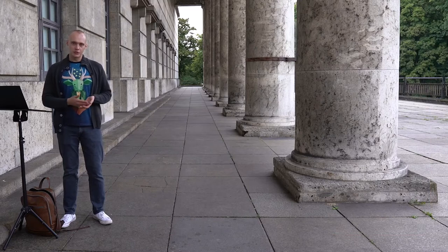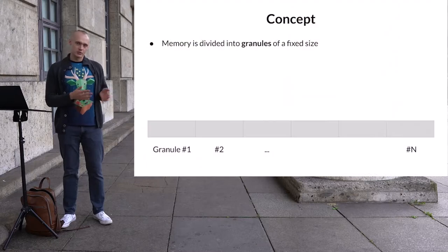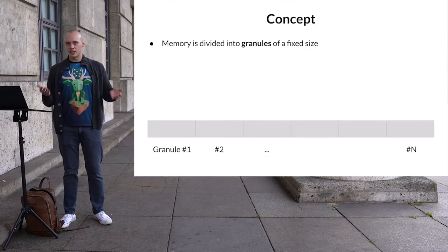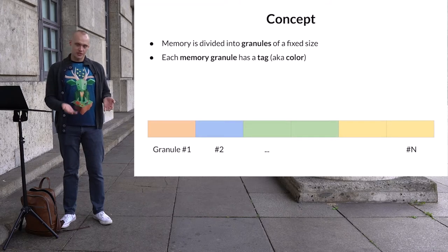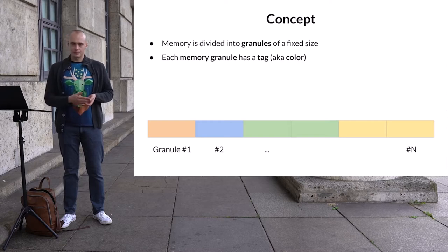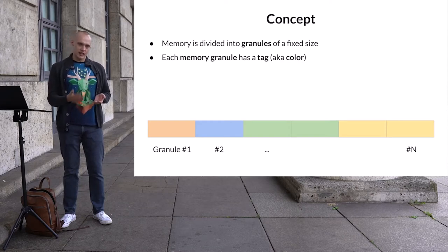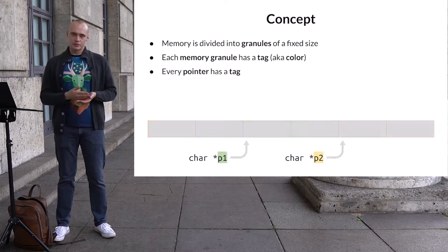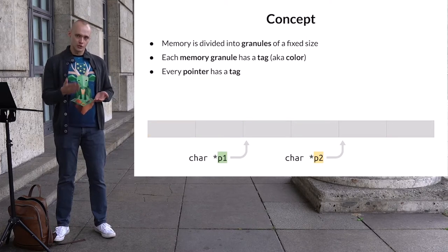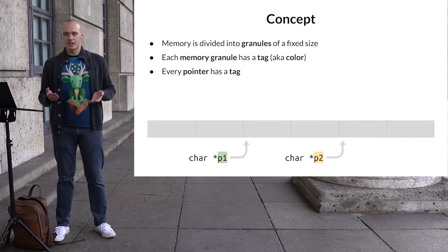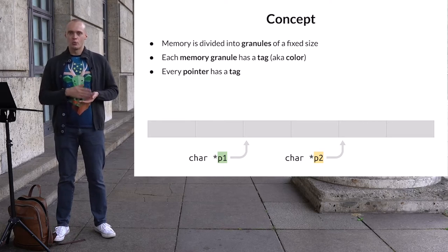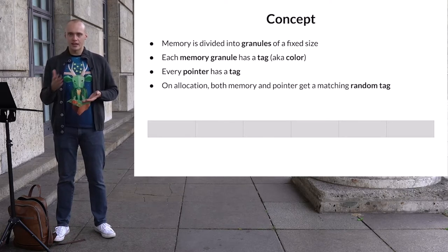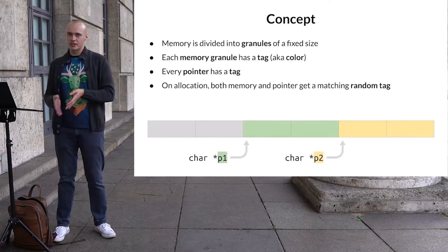Memory tagging is a technique for detecting memory corruptions. All memory is divided into small blocks called granules, and the size of each granule is the same. Each memory granule is associated with a tag — you may think of a tag as a number, but I'll be using colors to represent tags. Multiple memory granules can have the same tag. Besides memory granules, each pointer into memory also has a tag attached to it, using the same set of values as memory tags. When a memory block is allocated, both the allocated memory and the returned pointer get marked with the same tag.